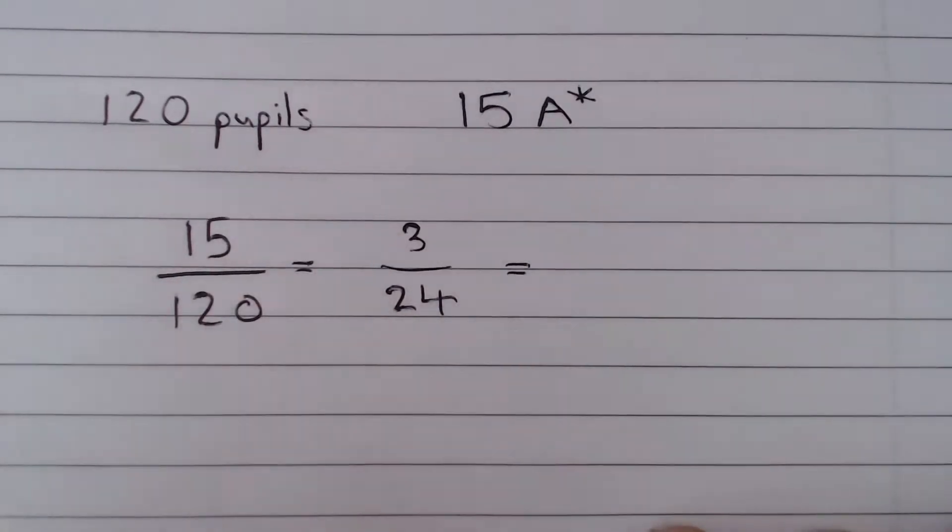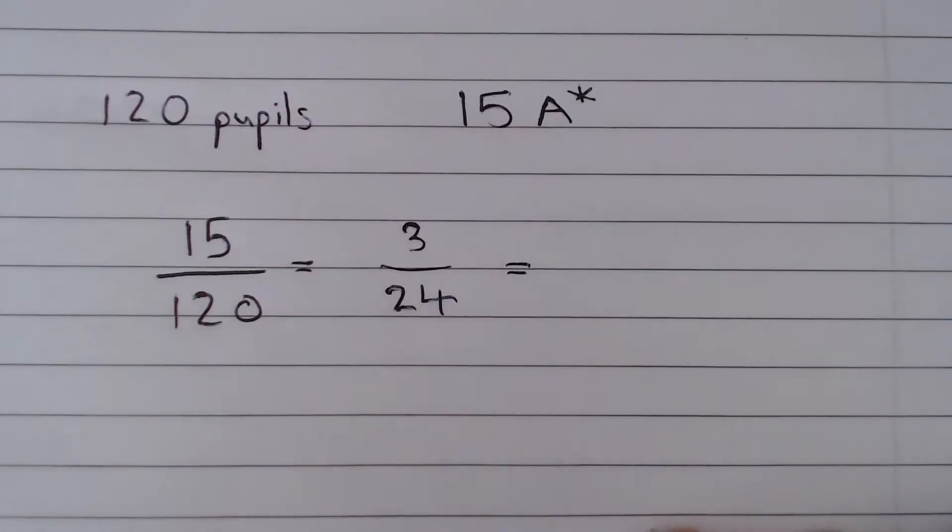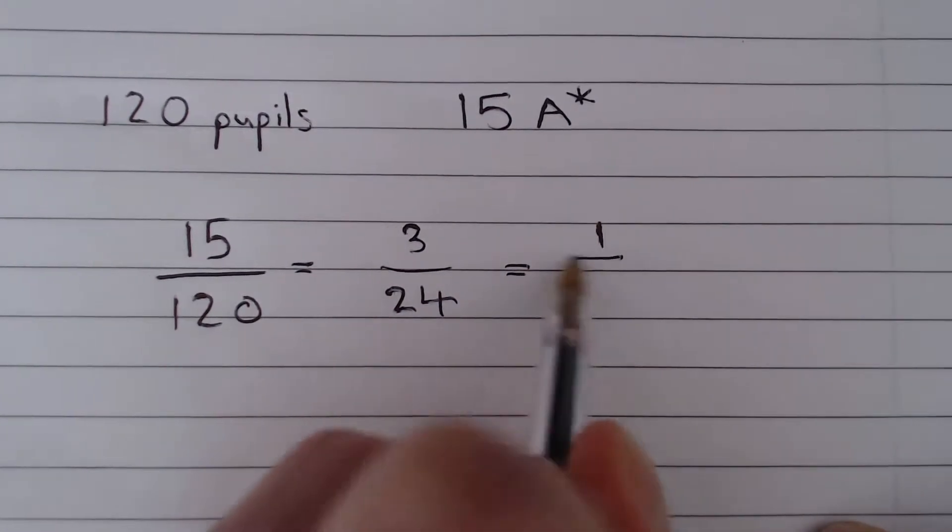So we have 3 over 24. And again, notice that 24 is a multiple of 3, and 3 is a multiple of 3. So we can reduce this to 1 eighth.